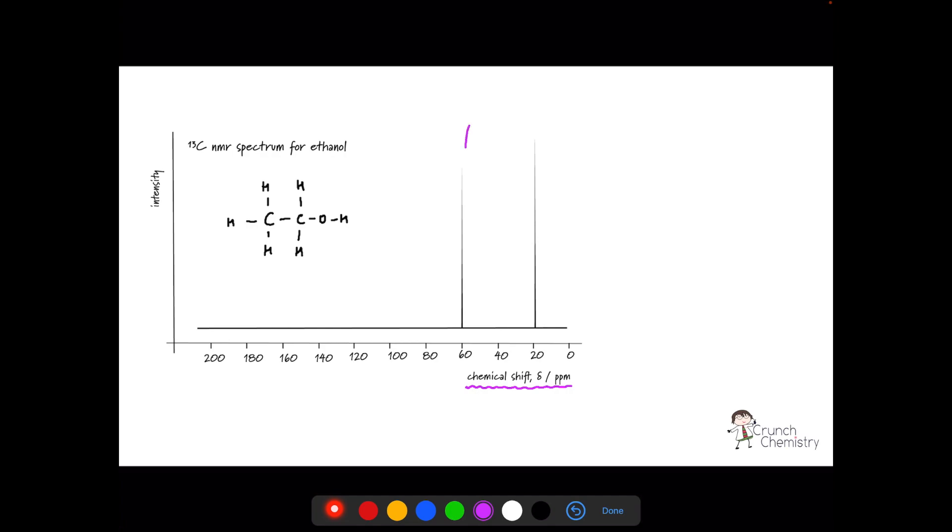And each signal or peak, and here are my two signals, each of these is in reference to a standard. And the standard that's been chosen is TMS, tetramethylsilane, an inert non-toxic solvent which is easily removed from the sample due to its volatility. It has the structure of a silicon atom bonded to four methyl groups.